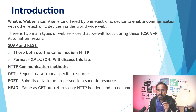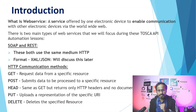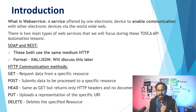What are the different HTTP communication methods available? First, you have the GET method, which is used to request data from a specific resource. The POST method is used to submit data to be processed to a specific resource. The HEAD method is used to upload a representation of a specific URI. The DELETE method is used to delete the specified resource. These are the different HTTP communication methods we can use with web services.